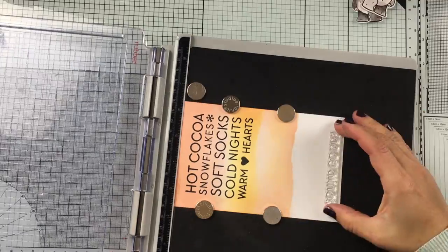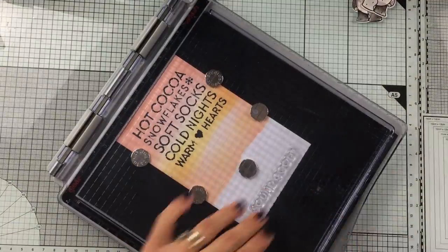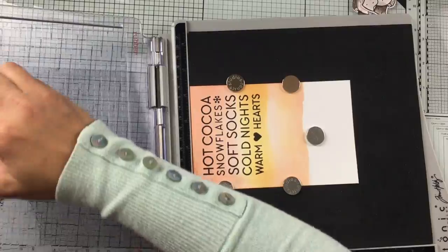Now I'm going to stamp this sentiment at the bottom of that panel using the same VersaFine Onyx Black ink.